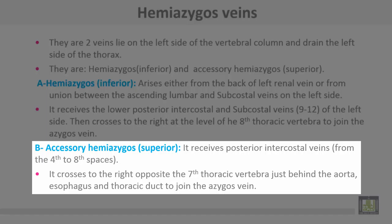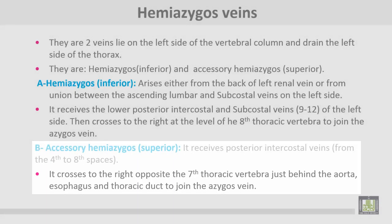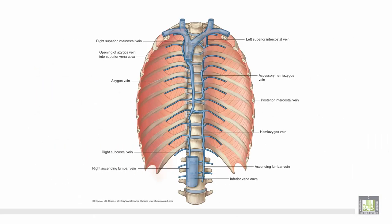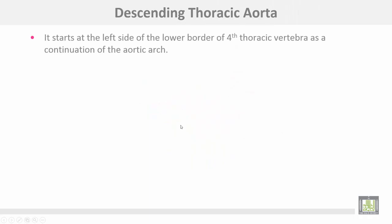The accessory hemi-azygous or superior hemi-azygous receives the posterior intercostal veins from the 4th to 8th spaces. It crosses to the right opposite the 7th thoracic vertebra, just behind the aorta, esophagus, and thoracic duct to join the azygous vein. This figure shows the accessory hemi-azygous (superior) and the hemi-azygous (inferior), crossing from left to right to join the azygous vein.